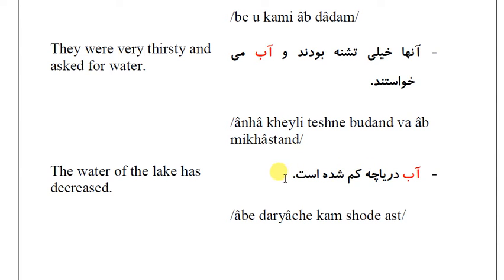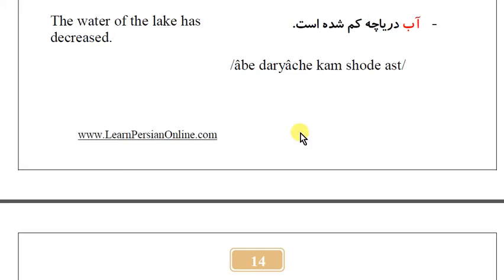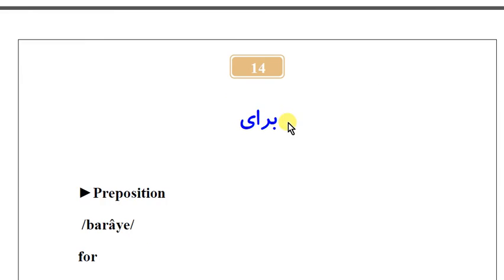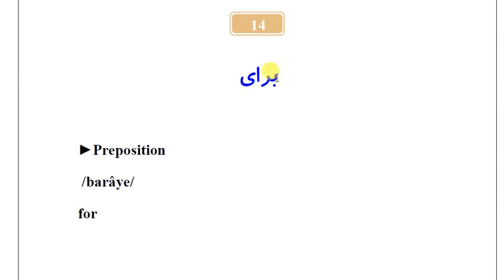آب دریاچه کم شده است — The lake's water has decreased. OK, the next word is برای (barāye). برای is a preposition and is a very common word in Farsi.